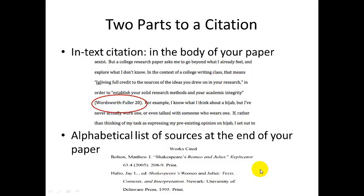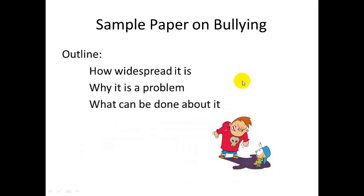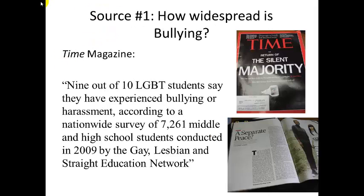Let's talk about specifics. Let's say I'm writing a sample paper on the topic of bullying. I want to say something about how widespread the problem is, why bullying is a problem, and what can be done about it. I want to find research sources that touch on each of those main research questions. My first source deals with how widespread bullying is — I found it in Time Magazine, and I found a quotation about statistics: 9 out of 10 LGBT students say they have experienced bullying or harassment. I wrote down that quotation, I think I'm going to use it in my paper, and it's from a magazine. That's source number one.